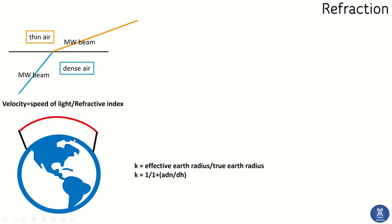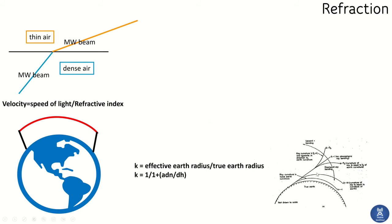In a general scenario, the microwave beam travels along a path that follows more than the curvature of the Earth. This bending is measured using the K factor, defined as: K = effective earth radius divided by true earth radius. The formula depends on two components: n, the refractive index, and H, the height.